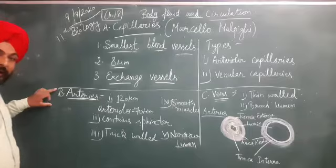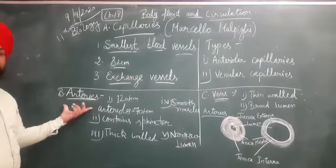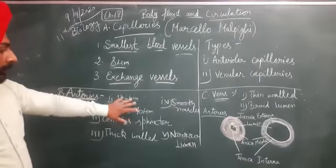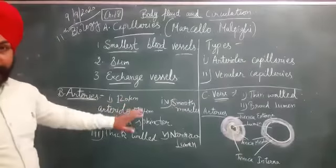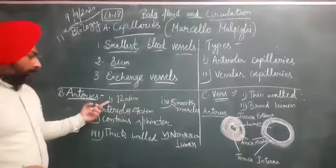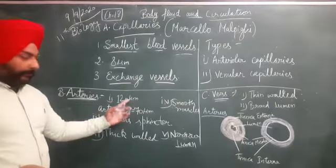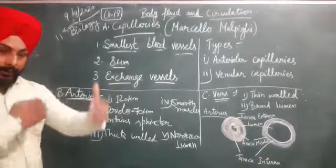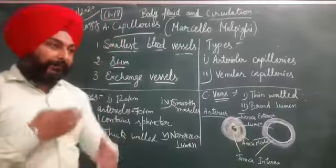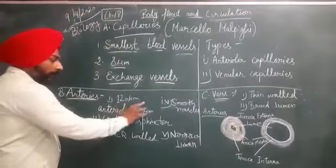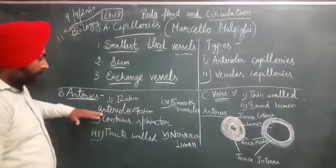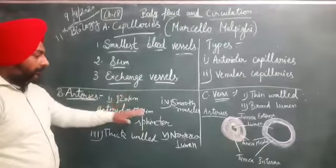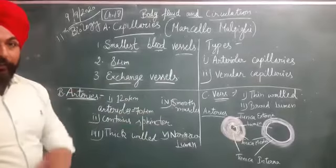The next blood vessel is known as the arteries. These are the widest and largest blood vessels. The diameter of the main arteries is 120 micrometers. The arteries which are branches of these main arteries have a smaller diameter of 70 micrometers.